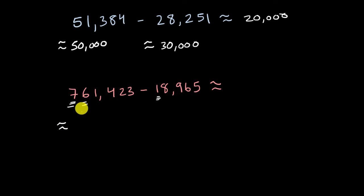then this one is going to be roughly equal to 760,000. And then this number is going to be roughly equal to 20,000, if I round to the nearest 10,000. And in my head, if I said, okay, 760,000 minus 20,000, I can do that in my head, that's going to be 740,000. So the difference of these two numbers is approximately 740,000, and I'm done.